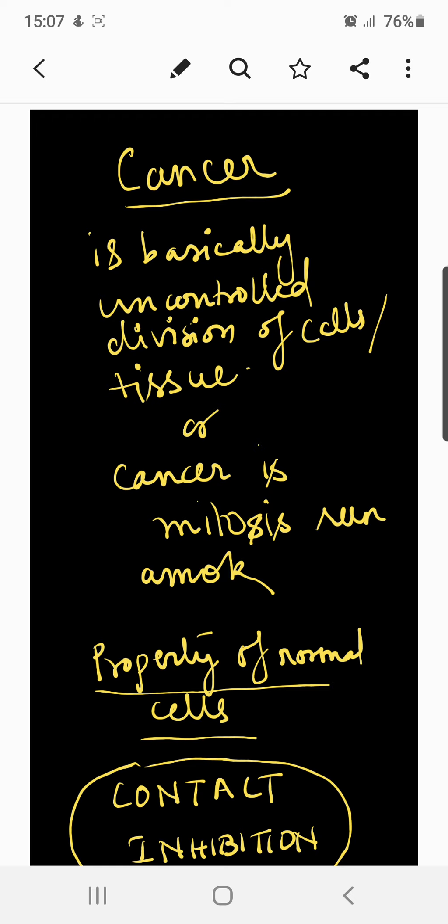This results in an abnormal growth called a tumor or neoplasm, which means new growth. In cancer of white blood cells, known as leukemia, no tumor is formed. So cancer is basically an uncontrolled division of cells or tissues — you can say cancer is mitosis run amok.